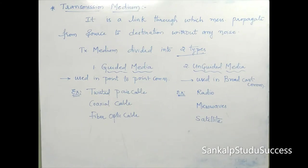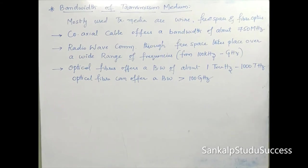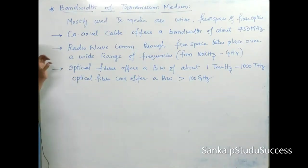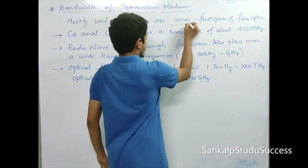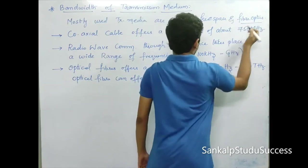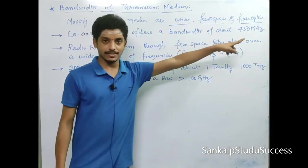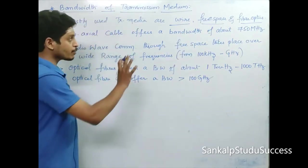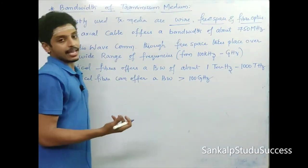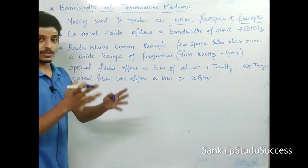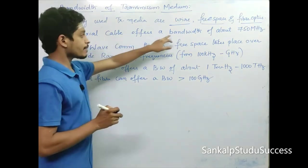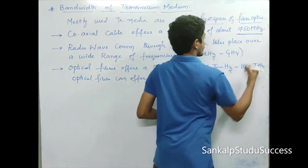Now let us discuss the bandwidth of transmission media. The mostly used transmission media are coaxial cables, fiber optics, and free space. The key frequency prefixes are: kilo = 10³, mega = 10⁶, giga = 10⁹, tera = 10¹². Coaxial cable offers a bandwidth of 750 MHz.